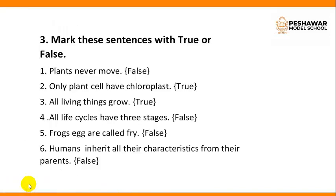Now, question number 3 on your book page number 40 — mark these sentences true or false. Number 1: Plants never move — False. Number 2: Only plant cells have chloroplasts — True. Number 3: All living things grow — True. Number 4: All life cycles have 3 stages — False. Some animals have 3 stages, some animals have 4 stages. Number 5: Frogs' young are called fry — False. Fish young are called fry. Number 6: Humans inherit all the characteristics from their parents — False.